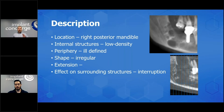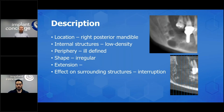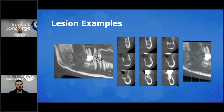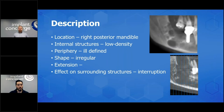Let's slow down so you had a chance to look at the image. So, my findings: location — right posterior mandible; internal structure — low density; periphery — ill-defined, not corticated, it looks like it's messing with all the bone around it; the shape — irregular. The biggest finding was the effect on surrounding structures: the bone is interrupted and perforated. We did not see a significant expansion. Look at those cortical outlines — they're non-uniformly thinned. So there's something potentially bad going on here.